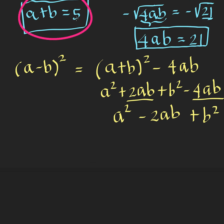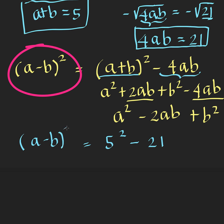Since we know that A plus B is equal to 5, then this part here is equal to 5 squared. And since we know that 4AB equals 21, then this part here is minus 21. And this one is equal to the quantity A minus B squared.